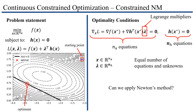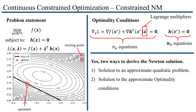We want a square system — a system that has the same number of equations as unknowns — so we have nx unknowns in x and nh unknowns in lambda. The question is: can we apply Newton's method here? And the answer is yes, we can. There are two ways in which we can derive the Newton step in the constrained case. When we talked about the unconstrained case, I mentioned two interpretations: one was a quadratic approximation of the objective function, and the other was a first-order approximation of the optimality conditions. We'll see that here we have the same thing.